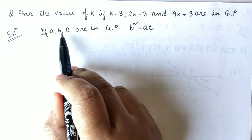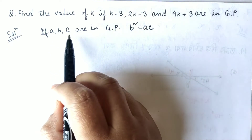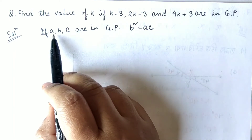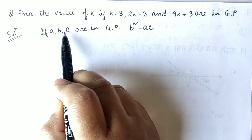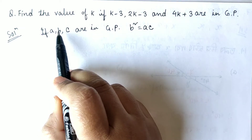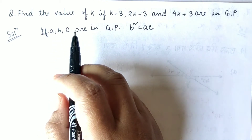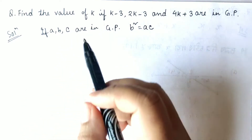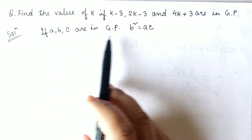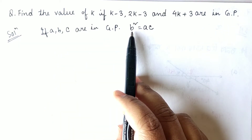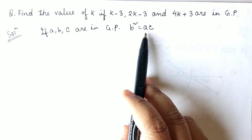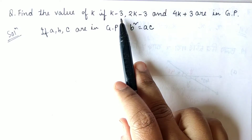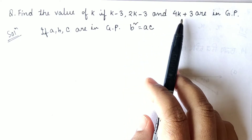The middle term squared equals the product of the extreme terms. You can also arrive at this by taking the ratio, because in a geometric progression the ratio between consecutive numbers is the same. So taking the ratio gives us b squared equal to ac. In the question, the three numbers given are (k minus 3), (2k minus 3), and (4k plus 3).